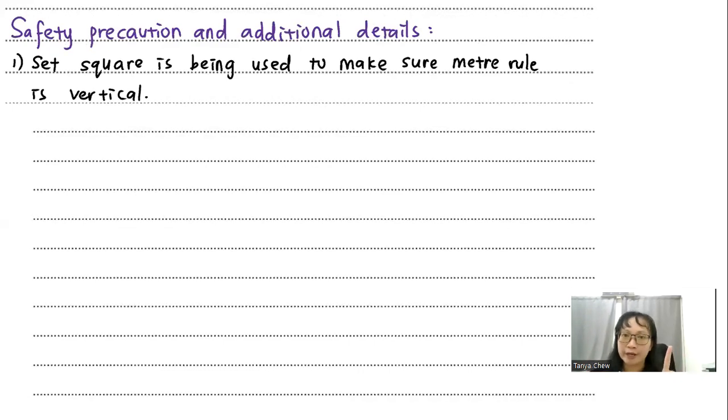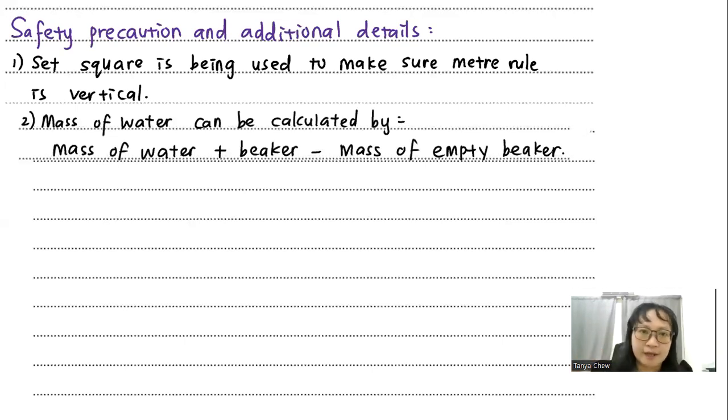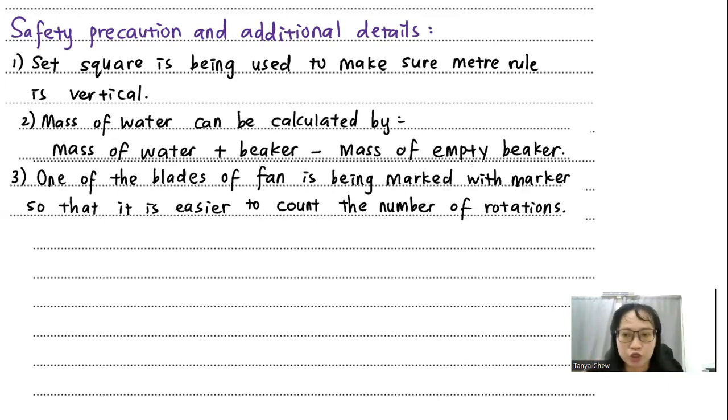So look at my answer here, my safety precaution and additional details. The first one is set square. It's being used to make sure meter rule is vertical. Everybody knows the function of the set square, but not many experimenters would take note of this. They just clamp the meter rule and they just see the height. That's it. So when you put a set square there, you can make sure that the meter rule is really 90 degrees to the surface of the bench, and you can measure the height as accurately as possible. Second safety precaution or additional detail is you tell us how we calculate the mass of the water. Q is related to mass of the water. You can calculate the mass of the water by the mass of the water plus the beaker minus mass of the empty beaker, remember? And the third safety precaution or additional detail will be one of the blades of the fan. I mark it with a marker so that it's easier for me to count the number of rotations when I play back on my video recorder.